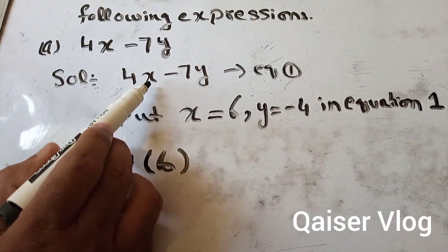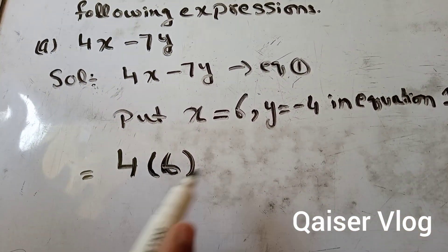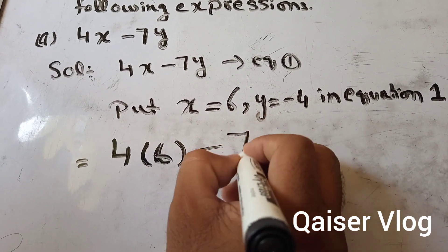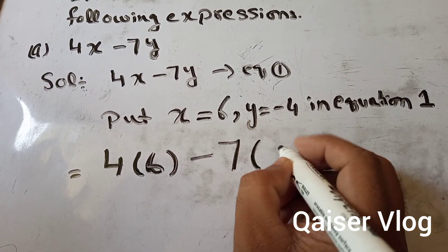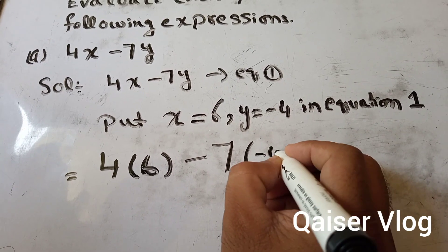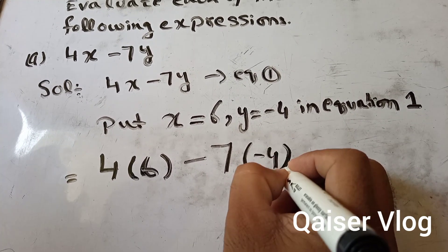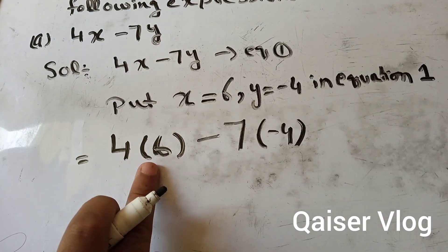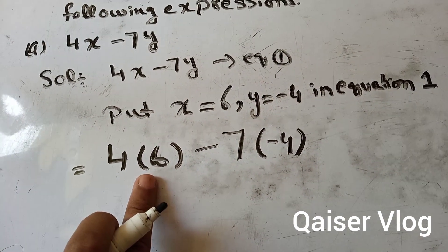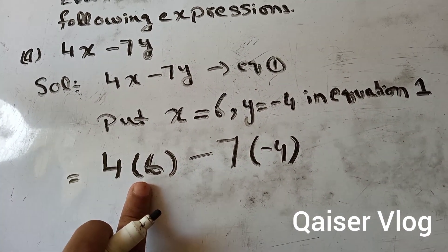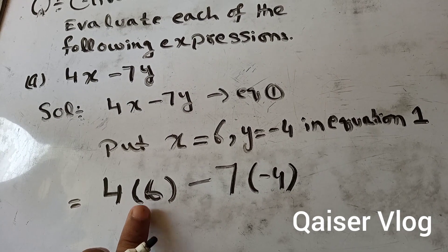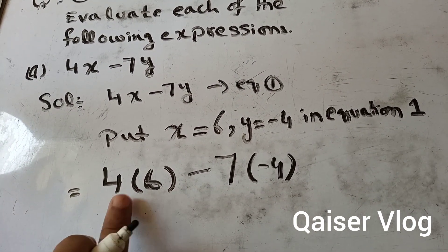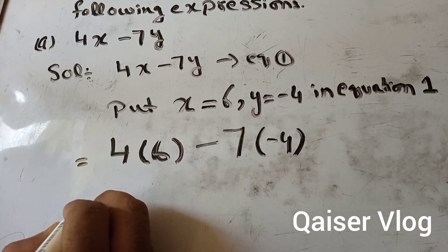This x will be replaced by 6, so 4 into 6, and minus 7 — y will be -4, so -4 will be replaced. So 4 into 6 is 24, because when we open the bracket the outer number is multiplied with the inner number: 4 multiplied by 6 is 24.